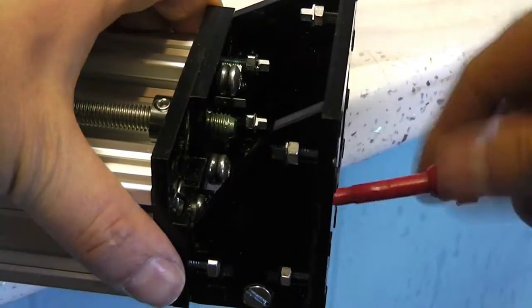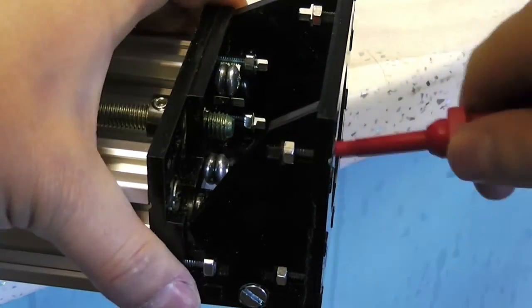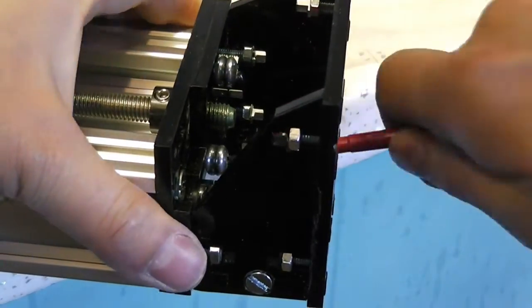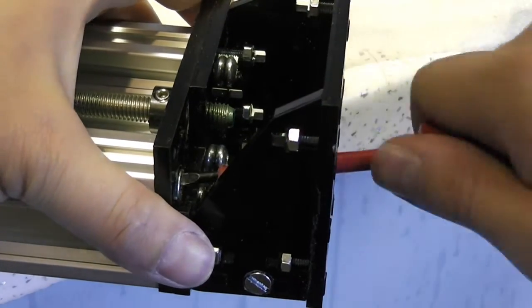But in the end I did get it on without stripping any of the thread out of the holes in the C-beam which did worry me a bit. I had to be very careful not to force any of the bolts in.